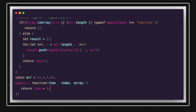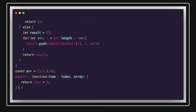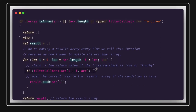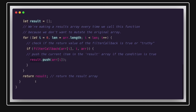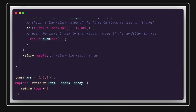Similarly, we can implement filter. In the filter function, we return elements based on a condition — the callback returns true or false. Map doesn't filter elements, it just manipulates them. In filter, we check the condition: if the callback returns true, we push that element to the result array. That is the only change.